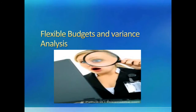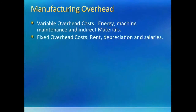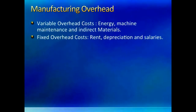Hello, let us continue our discussion on variances. In the last chapter, we learned to analyze direct manufacturing costs like material and labor. In this chapter, we will try to calculate variances for manufacturing overhead costs. Remember, we talked about manufacturing overheads before — they are the costs of manufacturing that did not fit into the material and labor category. We can break them into variable and fixed manufacturing overhead costs.